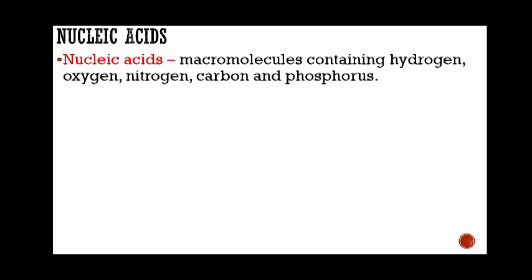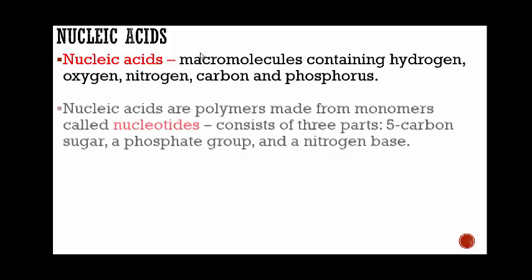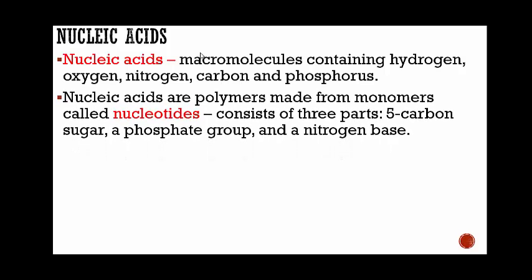Now nucleic acids — macromolecules containing hydrogen, oxygen, nitrogen, carbon, and phosphorus. If you see something that contains those five elements, you know it's a nucleic acid. Nucleic acids are polymers, meaning more than one monomer, made from monomers called nucleotides. So nucleotides are the monomers and nucleic acids are the polymers — the nucleotides make up the nucleic acids.